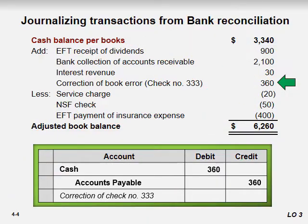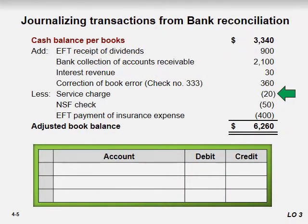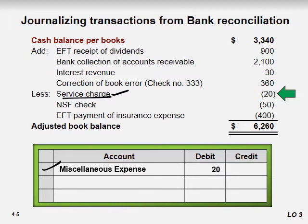Next is the service charge: the bank charges us $20. Service charges are an expense, so our cash is reduced. The entry would be Service Charges to Cash. You can also write it as Miscellaneous Expenses to Cash — both are correct.